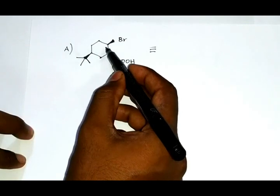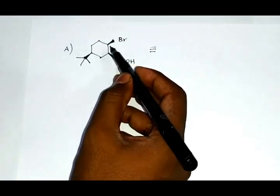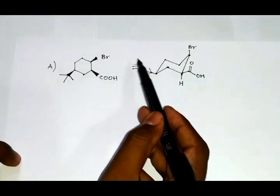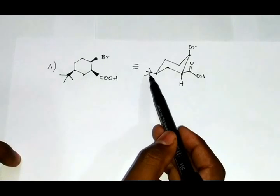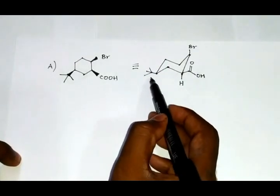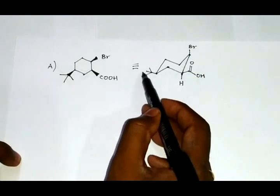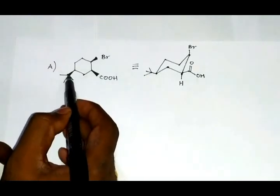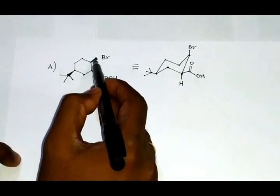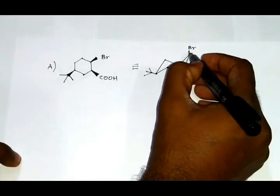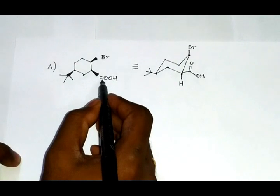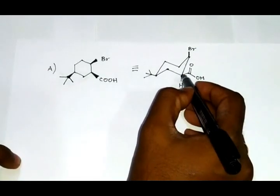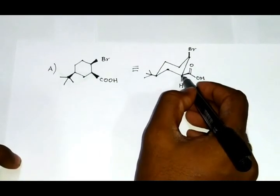This cyclohexane ring can be drawn in the form of a chair. In case of reaction A, the most stable conformation of cyclohexane is with the tertiary butyl group on the equatorial position. Since it is above the plane of the paper, the bromine group is shown above the plane of the paper, so it is kept at the axial position.